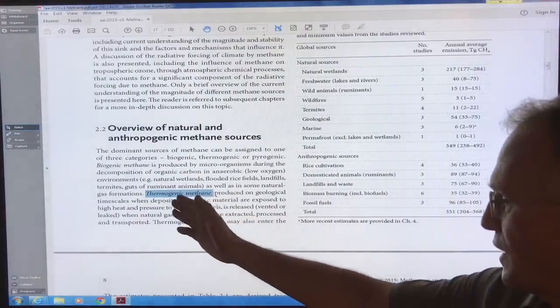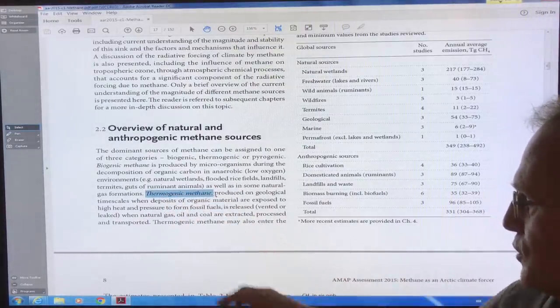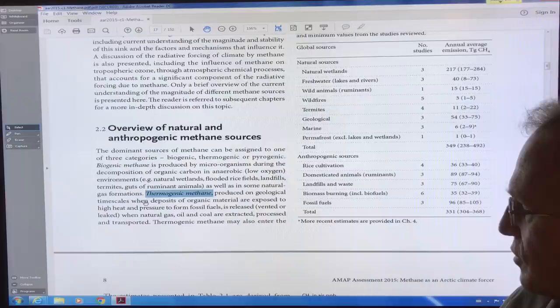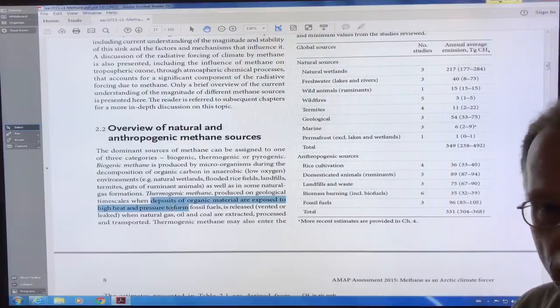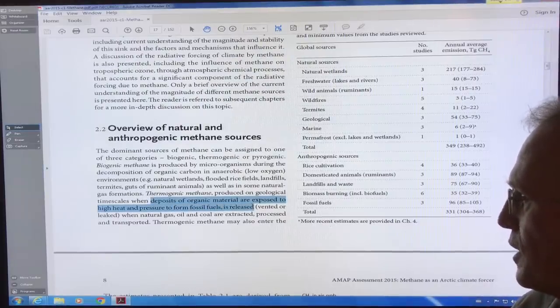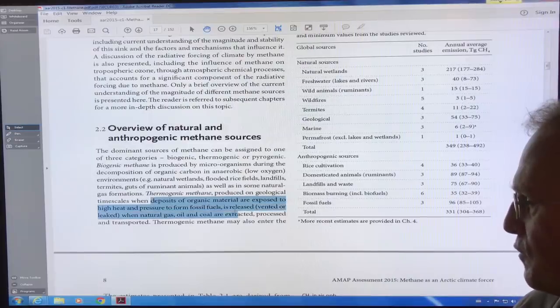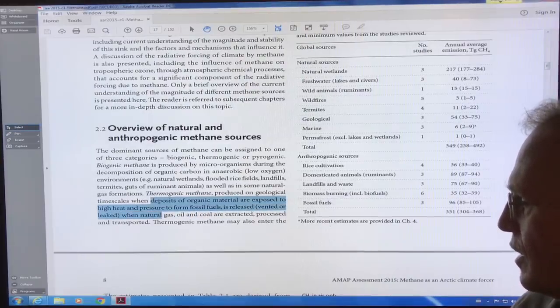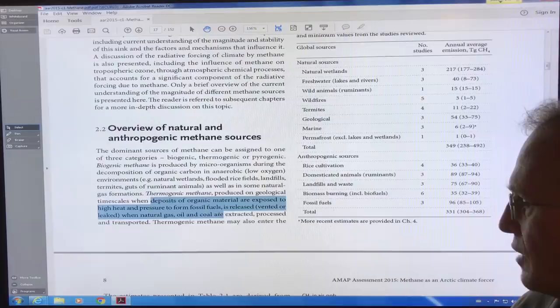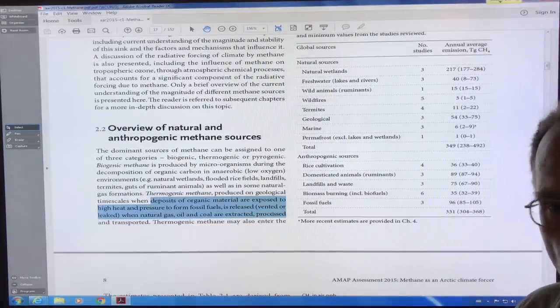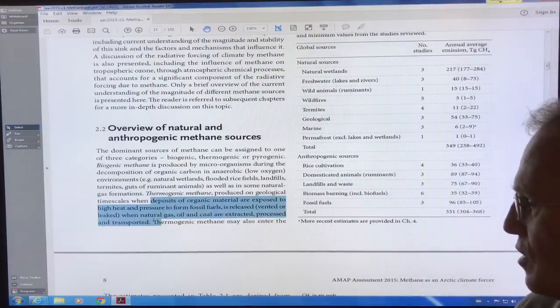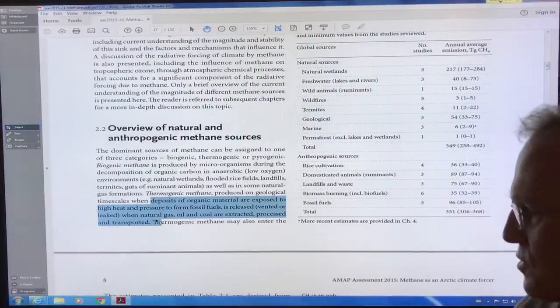Thermogenic methane is produced on geological time scales when deposits of organic material are exposed to high heat and high pressure. You get fossil fuels forming. When the pressure is released, for example, when it's vented or leaked, or when we extract natural gas, oil and coal, when we mine the stuff, we bring it to the surface, pressure is lower, methane is released. Natural gas, fracking.